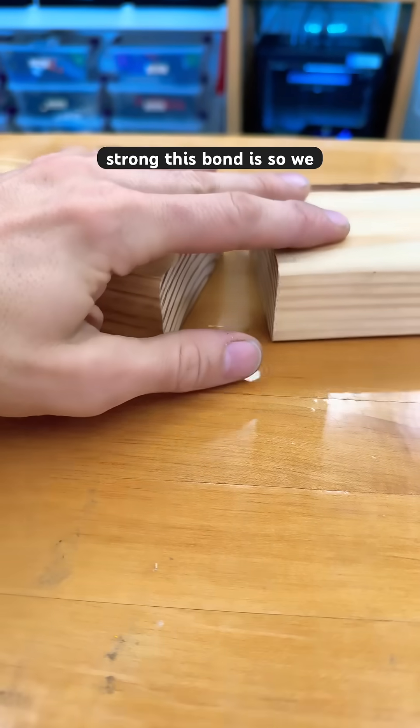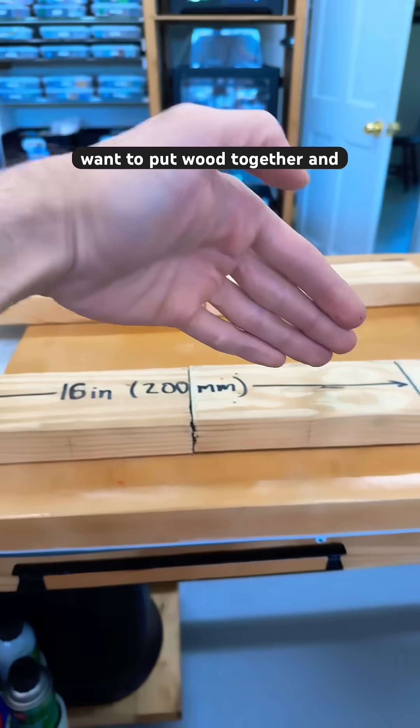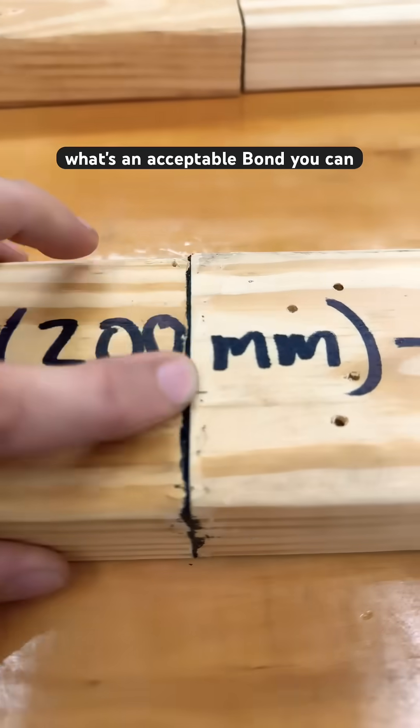You're not going to believe how strong this bond is. So we want to put wood together and we want it strong. How strong? What's an acceptable bond?